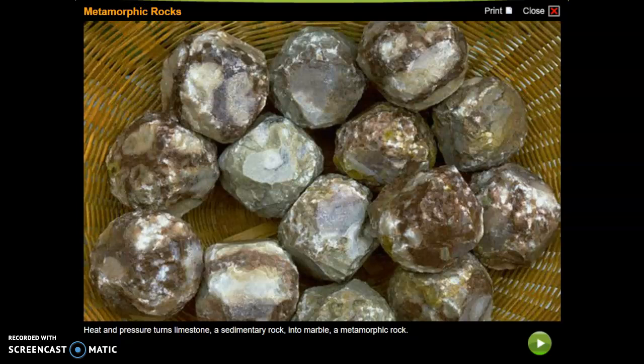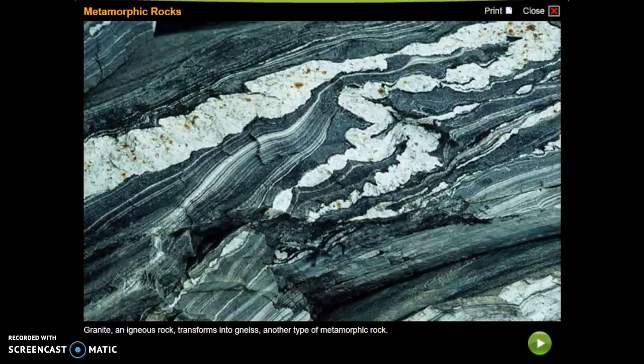Heat and pressure turns limestone, a sedimentary rock, into marble, a metamorphic rock. Granite, an igneous rock, transforms into gneiss, another type of metamorphic rock.